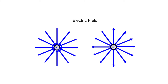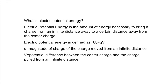That is why negative charges have field lines pointed inwards and positive charges have field lines pointed outwards. Now let's talk about electric potential energy. Electric potential energy is the amount of energy necessary to move a charge from an infinite distance away to a certain distance away from the center of the charge.